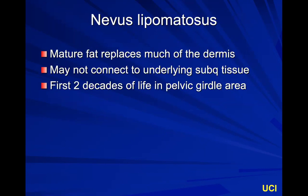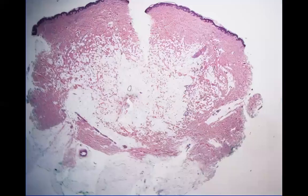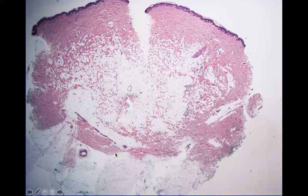Nevus lipomatosis is a fat tumor where fat replaces much of the dermis — very superficial fat that may not connect to the underlying subcutaneous tissue. To truly diagnose it, you need a clinical history: it occurs in the first two decades of life in the pelvic girdle area. In middle-aged patients, the differential is nevus lipomatosis versus a superficial lipoma versus a fatty tag — we can't distinguish without clinical history. Here you can see mature adipocytes up in the dermis, with subcutaneous tissue below.